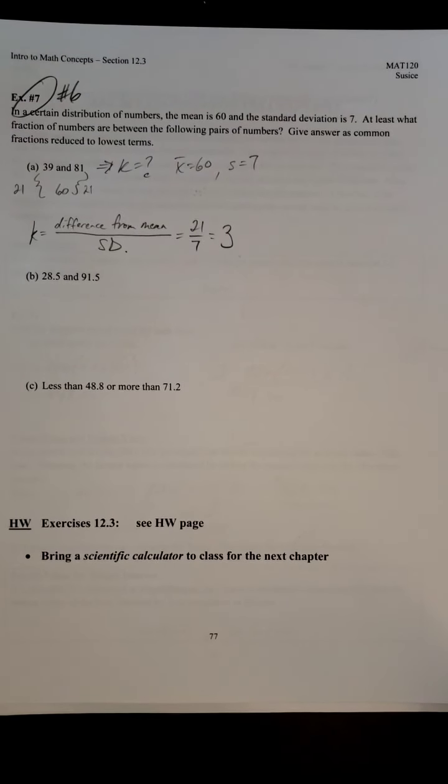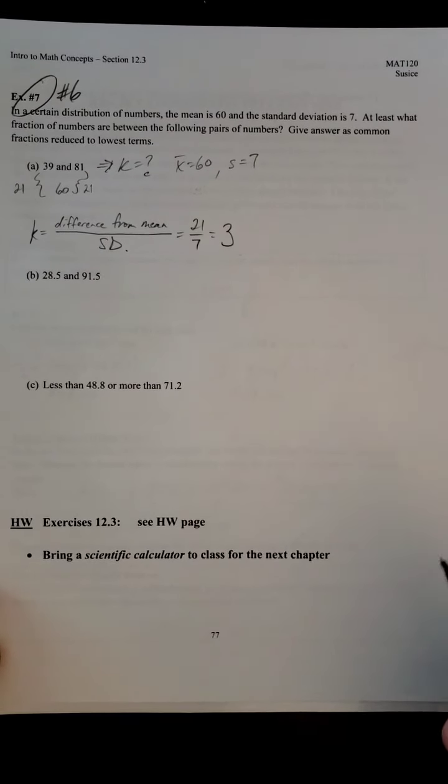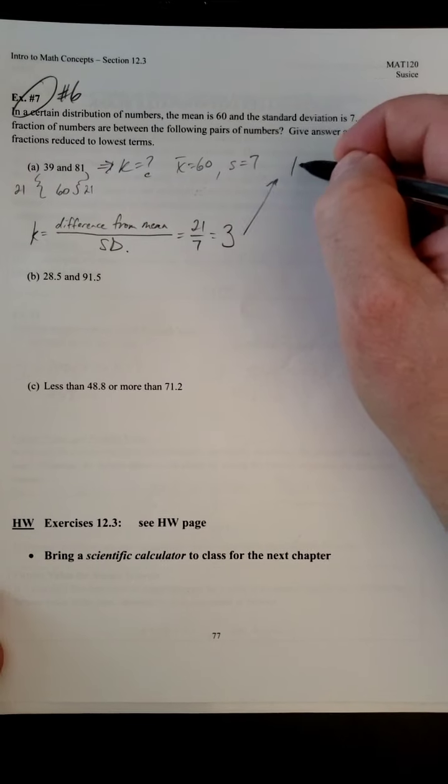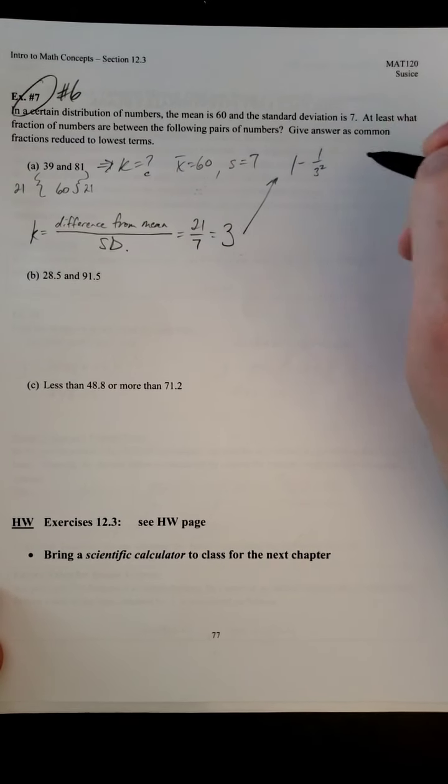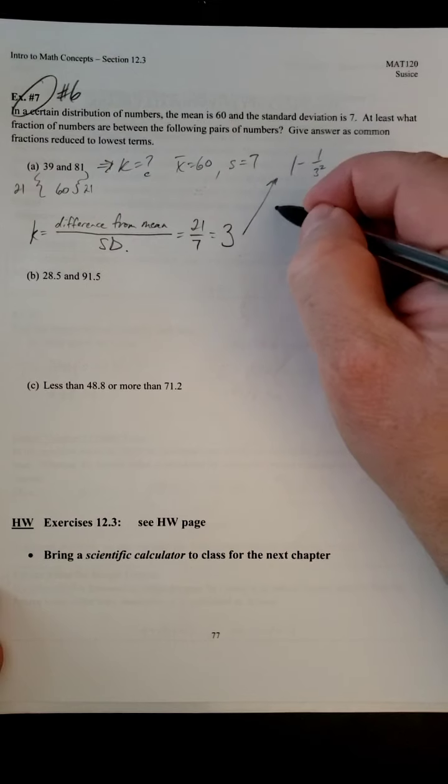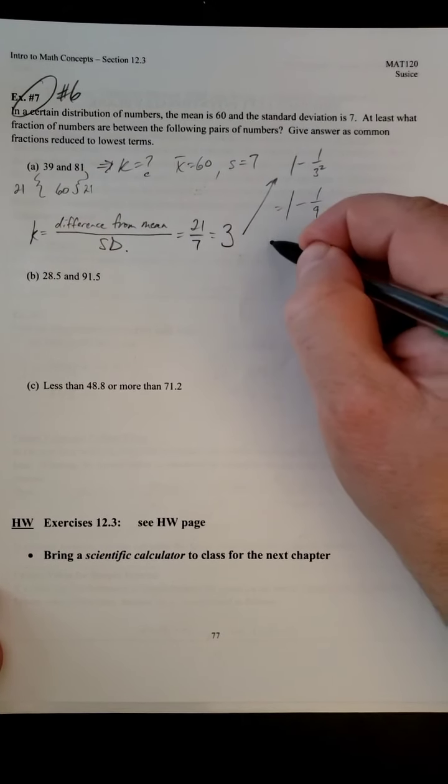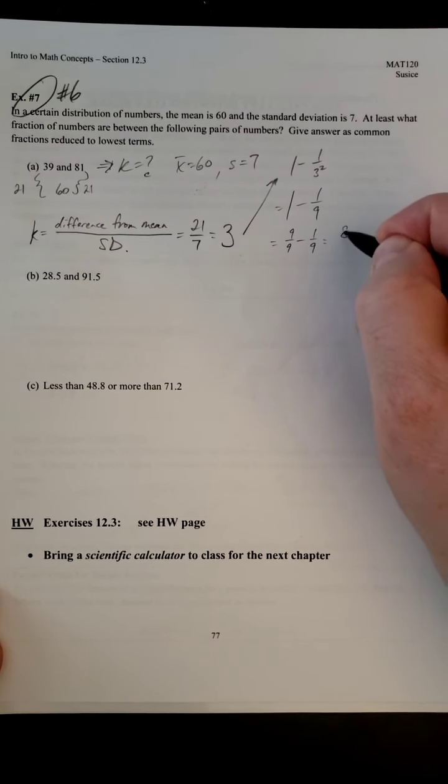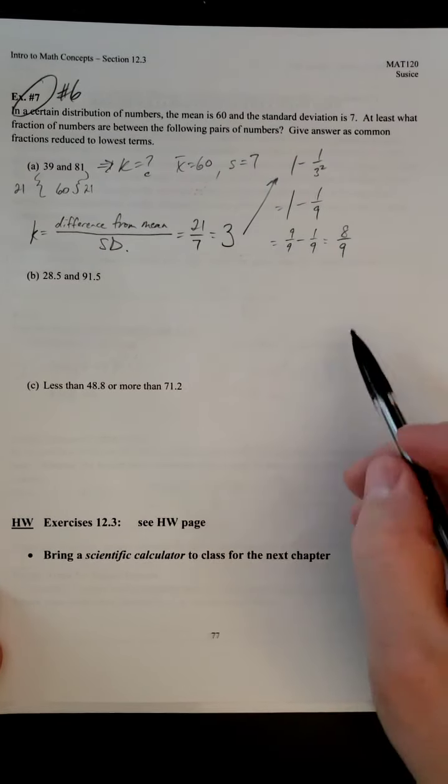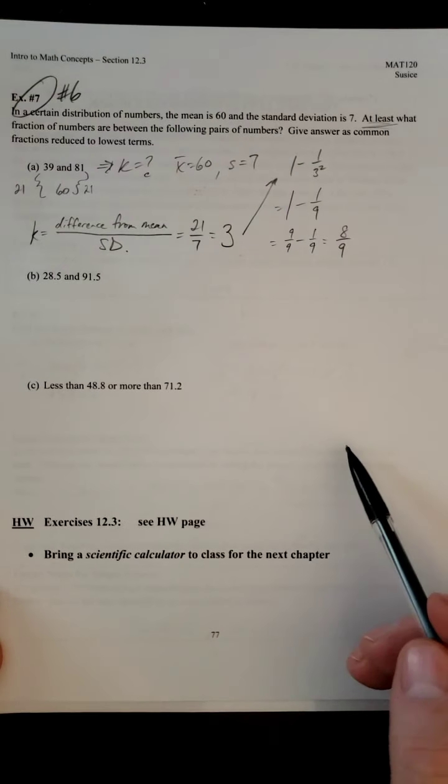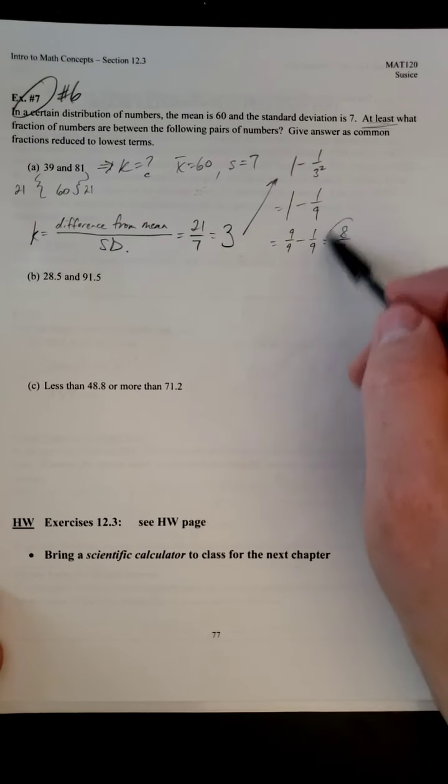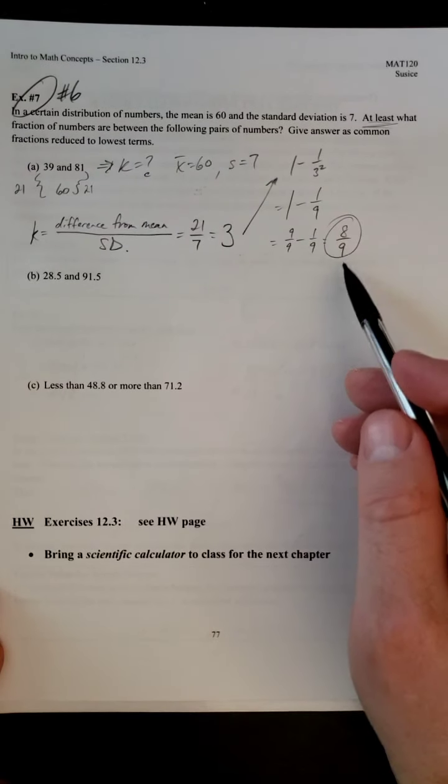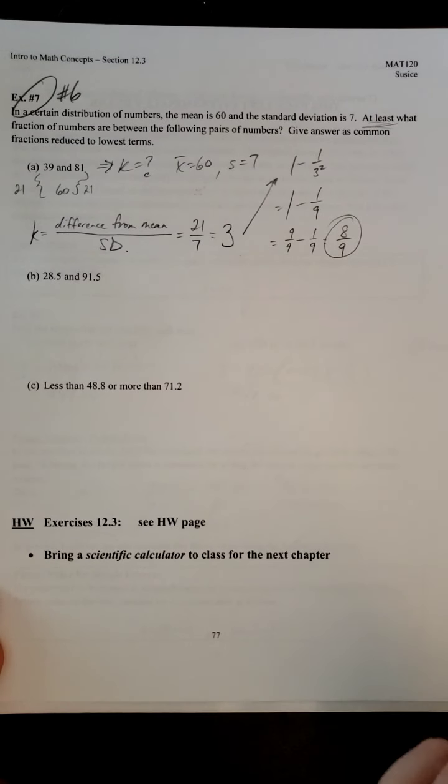So now we know what k is. Now we can plug it into our Chebyshev's formula. We're going to get 1 minus 1 over 3 squared, and we know that that's 1 minus 1 over 9, which is 9 over 9 minus 1 over 9. So we get 8 over 9. They've already got at least in the problem itself, so 8 over 9 is going to be your fraction.